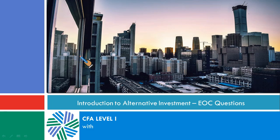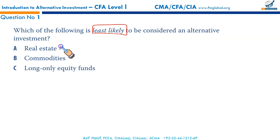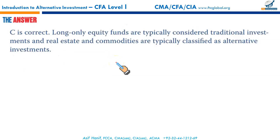Your next reading is Introduction to Alternative Investment, starting with question number one. Which of the following is least likely — mind the word — least likely to be considered an alternative investment? If you have read your theory, you would know real estate is an alternative investment. Commodities, yes, alternative investment. But long-only equity funds — they are considered a traditional investment. So this is least likely to be considered an alternative investment. That makes C the correct option.